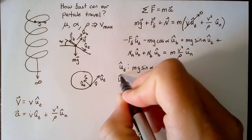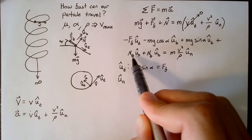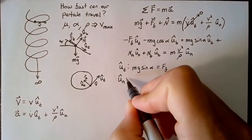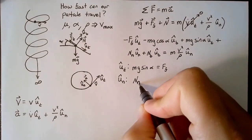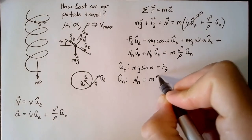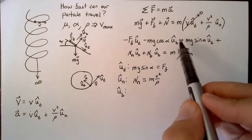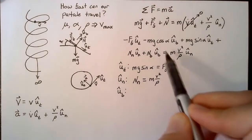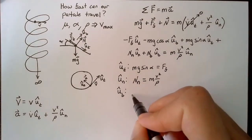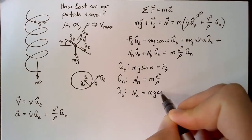In the normal direction, we again have two terms. We have the normal component of the normal vector here, and we have our acceleration on the right hand side. That means this equation can be written as n sub n is equal to mv squared over rho. Finally, in the binormal direction, we have this gravity component and this normal component. There's nothing on the right hand side, so these two have to equal zero. So we can write this as nb is equal to mg cosine alpha.